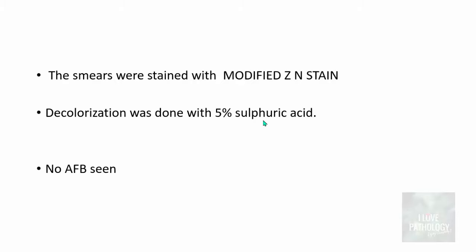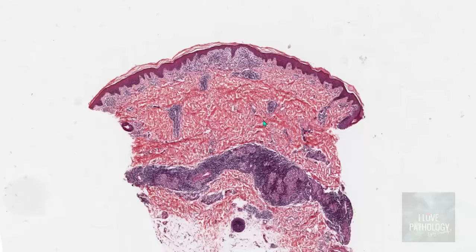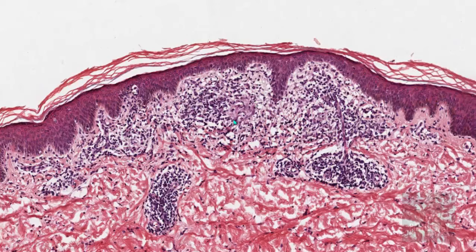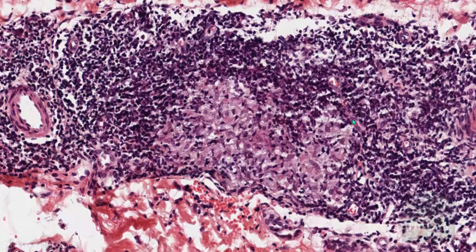In this case, there were no AFB on the slit skin smear. So while the clinical criteria confirm leprosy, the absence of bacilli means we are looking at paucibacillary type. The patient underwent a biopsy from the hypopigmented patch. The biopsy showed skin epidermis and dermis, with the dermis busy with lots of inflammatory cells, including in the adnexal areas. The lighter-stained areas represent granulomas — small collections of epithelioid cells surrounded by lymphocytes — with granulomatous inflammation around adnexal and neural structures throughout the dermis.